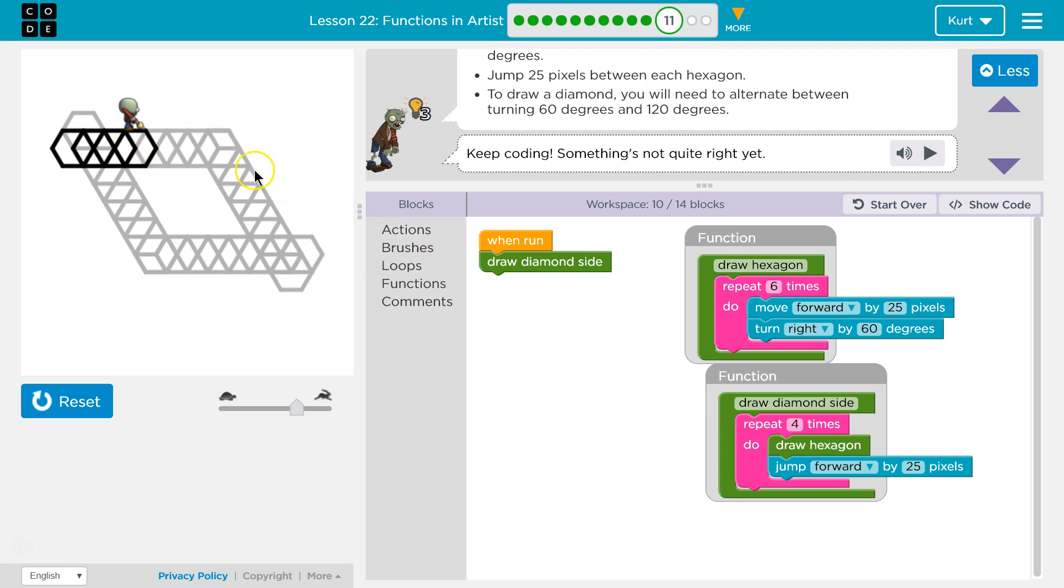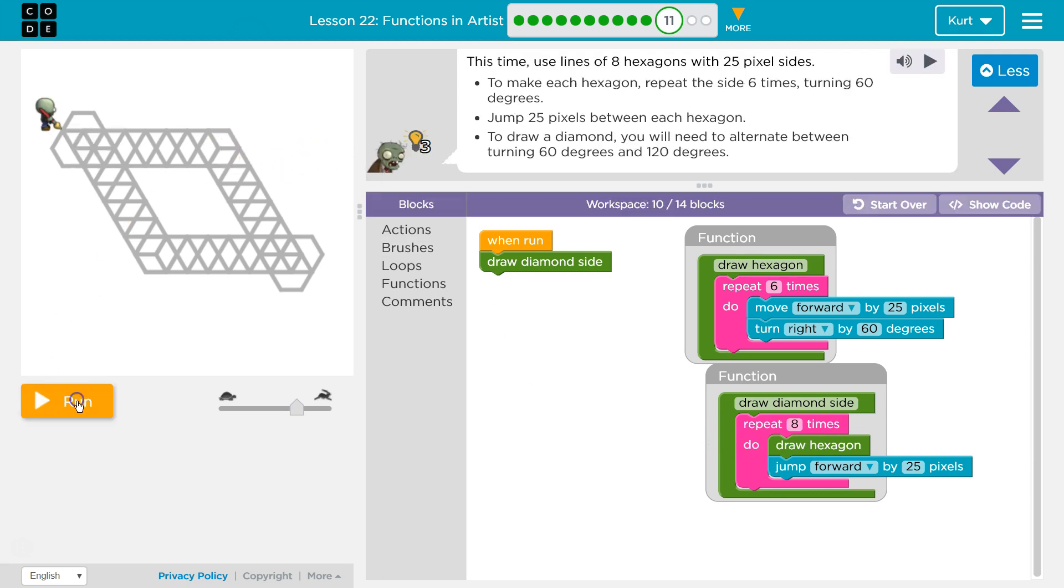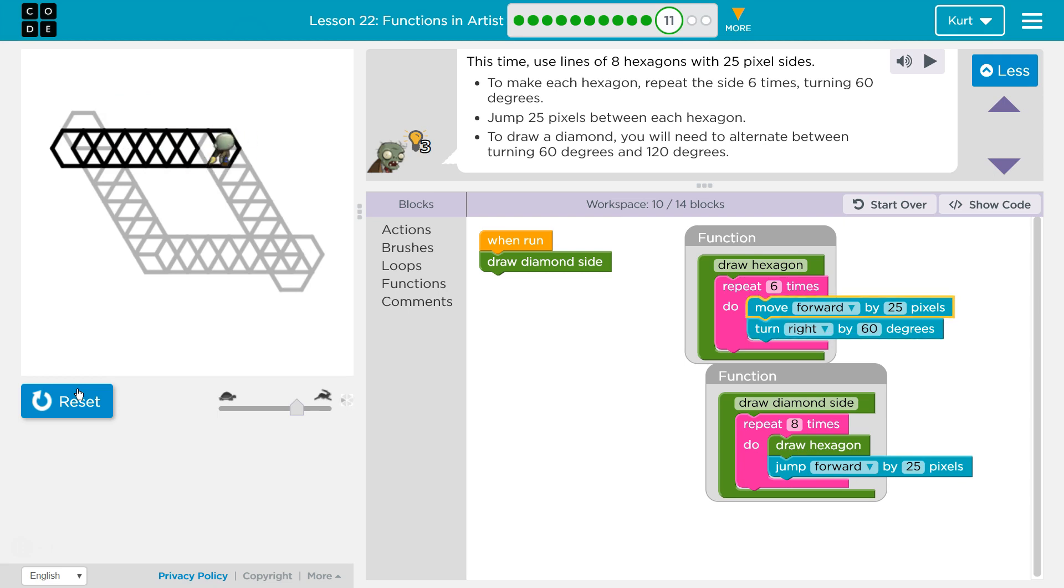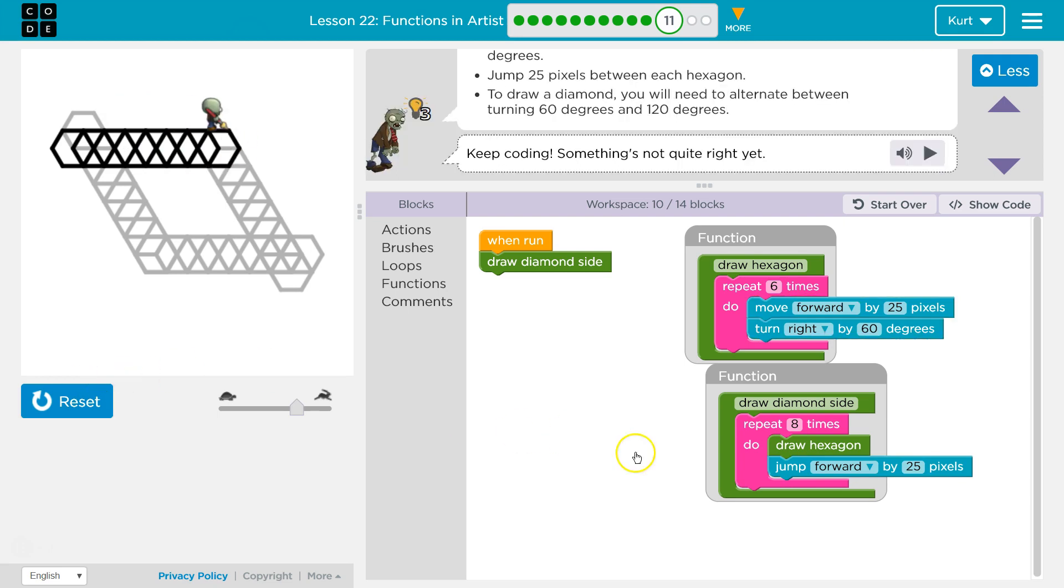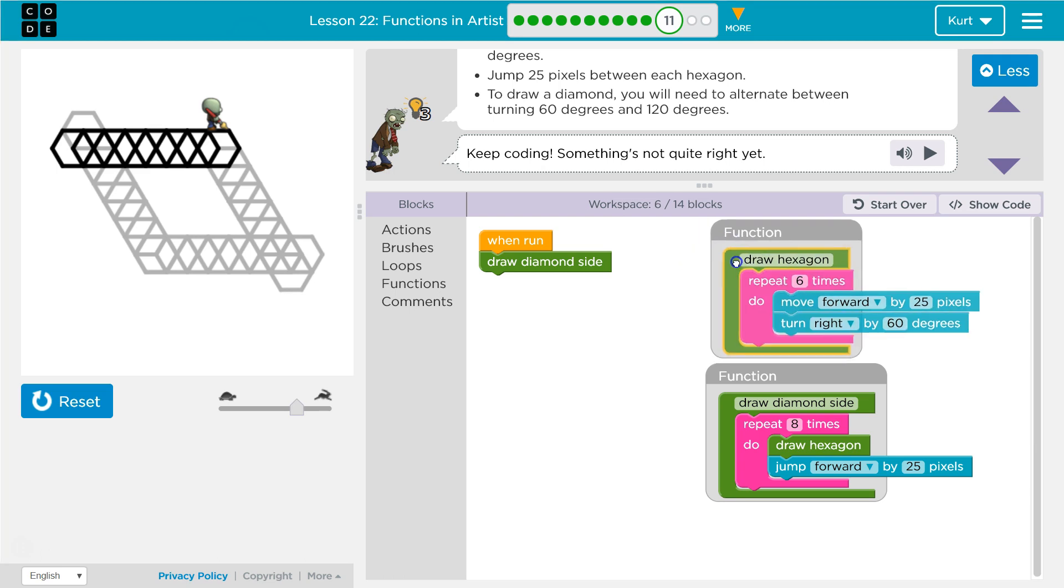Except we didn't get, are we about halfway? Let's try eight then. If we're about halfway down this side. Ba-da! Awesome. So this is good progress. Now that we've got to draw a diamond side, how many times do we need to do this?